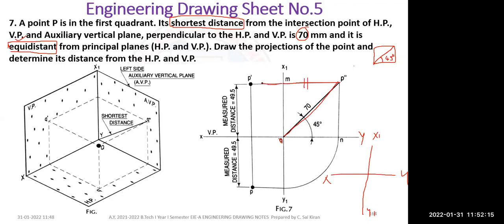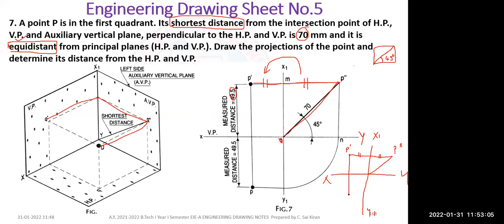Measure this distance — both distances are equidistant. Draw a horizontal line, mark P double dash, transfer the same distance to the other side, and mark point P dash (front view). This distance comes as 49.5 mm as per the textbook. Take the same 49.5 equidistance and mark point P (top view). If anyone doubts why it is 49.5, there is another method.